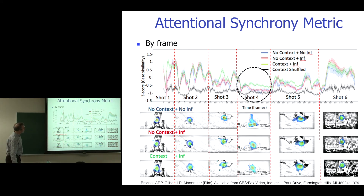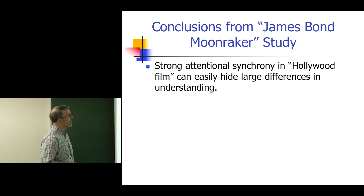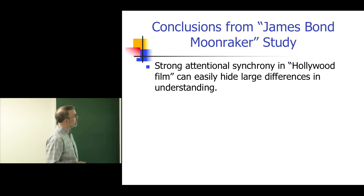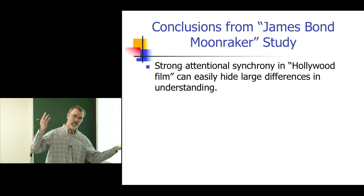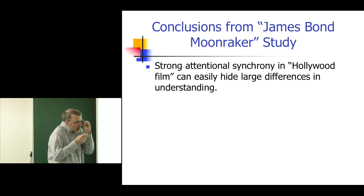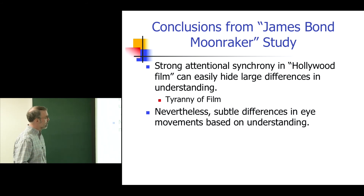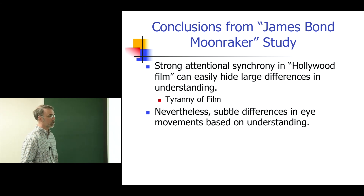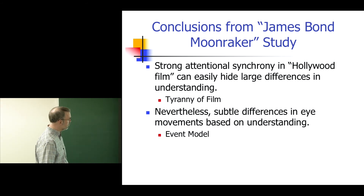From this experimental case study, we can conclude that there is strong attentional synchrony in a Hollywood film, and it can easily hide large differences in understanding. We had big differences in understanding between people who knew the guy was going to fall in the circus tent and those who did not, but we only find very small differences in eye movements. This is consistent with the tyranny of film hypothesis. On the other hand, we are finding subtle but real differences in eye movements based on understanding — evidence that the event model does have an impact on attention.